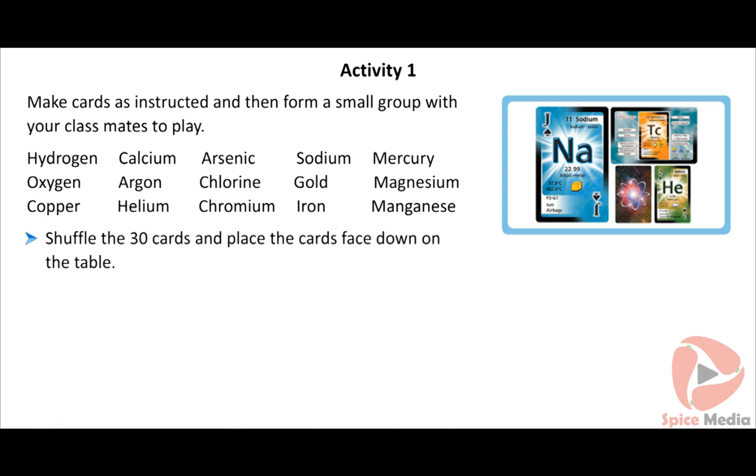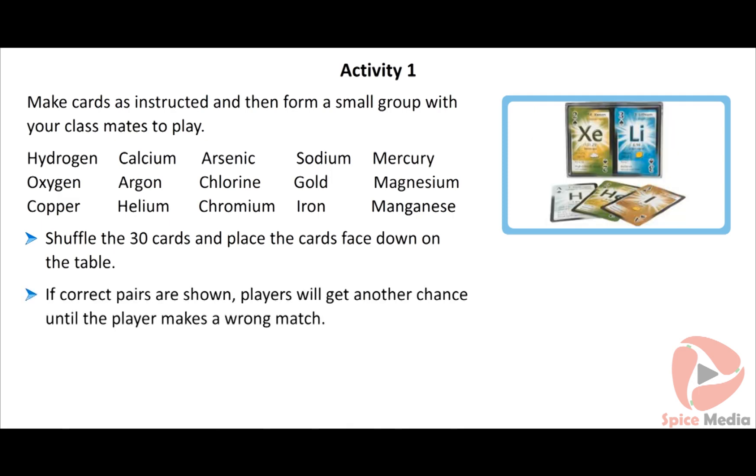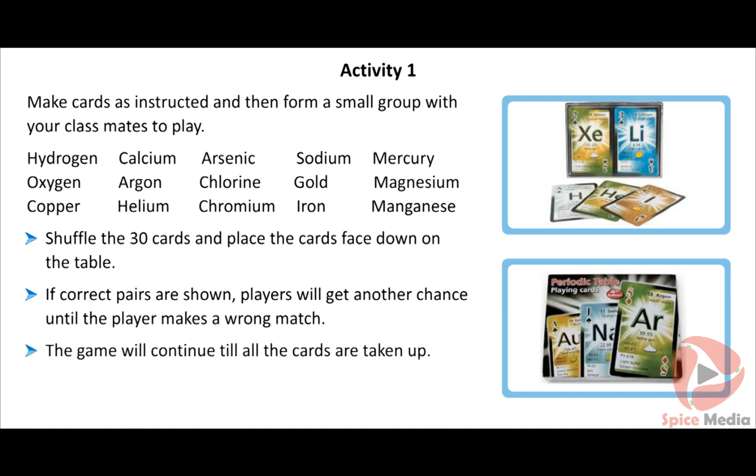Start the game. Each player will get a chance of taking two cards at a time to see. If the player does not get the correct pair, then he or she should keep the cards in the original position. If the name and symbol of the cards match correctly, then he or she can show to all the players and can keep the correct pairs of cards with him or her. If correct pairs are shown, the players will get another chance until the player makes a wrong match. The game will continue till all the cards are taken up. The winner is the one having maximum number of cards.